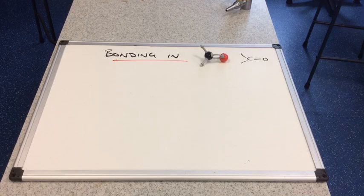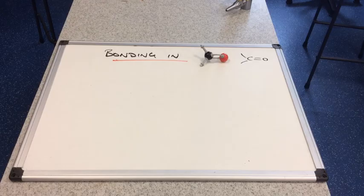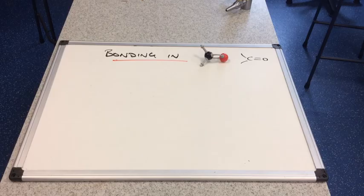We'll take a look now at the bonding in the carbonyl group and I imagine you're going to recognize a lot of this because you've seen it before in the bonding in the carbon-carbon double bond in alkenes and also in benzene as well.